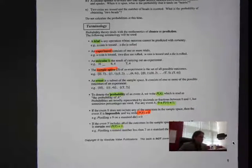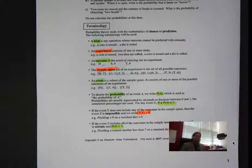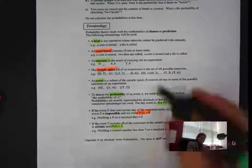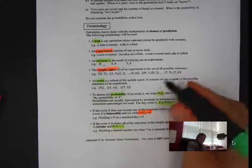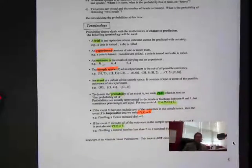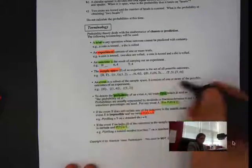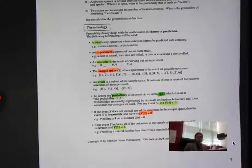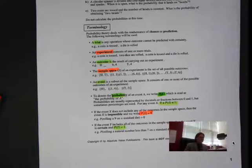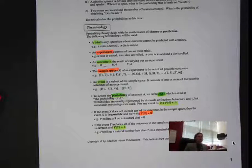To denote probability, we use the term P(A). This is key. This is how we denote probability — P(A) means the probability of A.